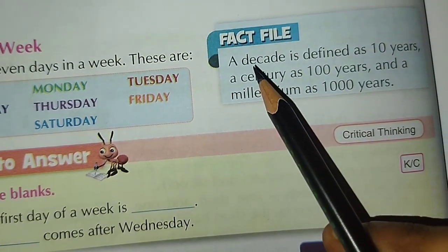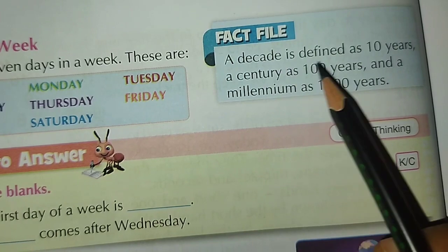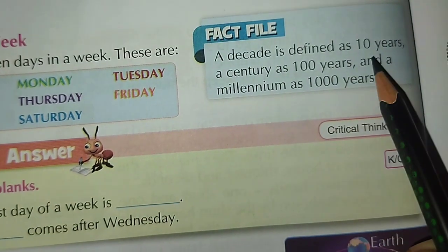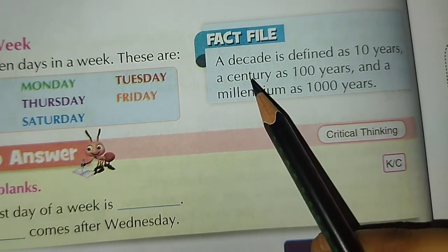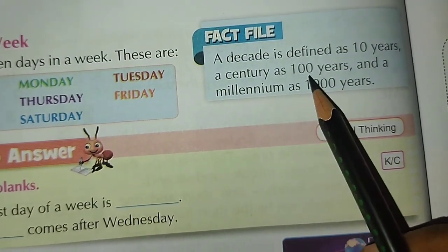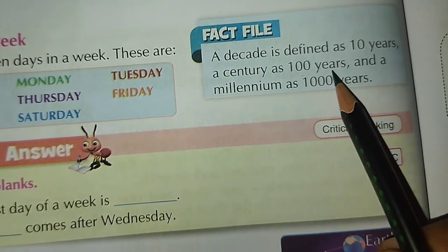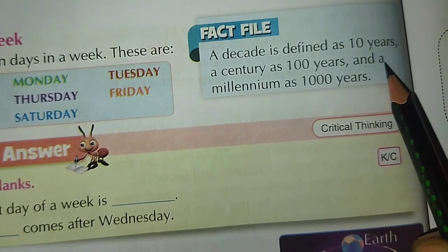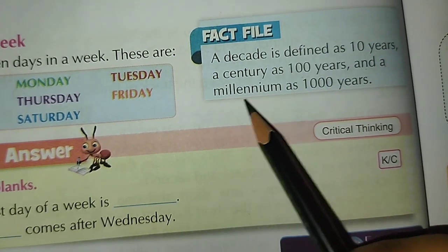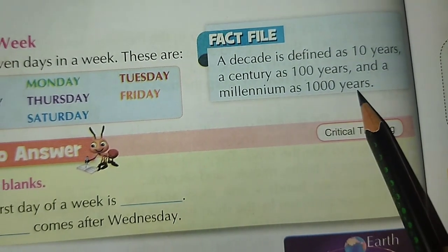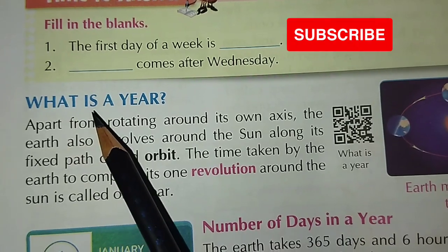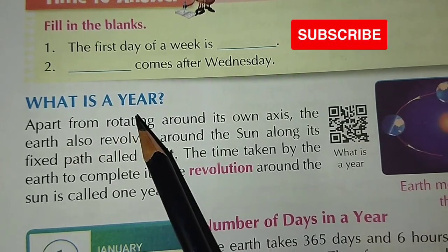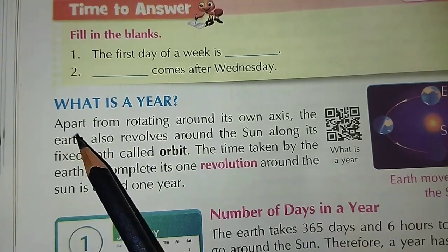A decade is defined as 10 years. A century has 100 years. And a millennium has 1000 years.